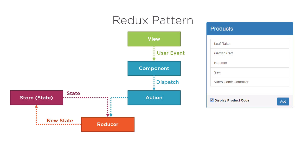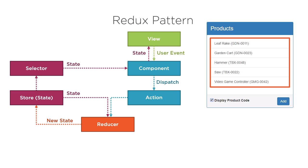Any component subscribes to the store using a selector to get notified of specific state changes. Think of a selector like a stored procedure for our application store — it knows how to locate and return data from the store. When new state is replaced in the store, the component is notified of that new state and bound values in the view are updated.